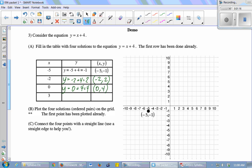And then one more, we'll do 3. y is going to be 3 plus 4, which is 7. So my ordered pair is 3 comma 7.